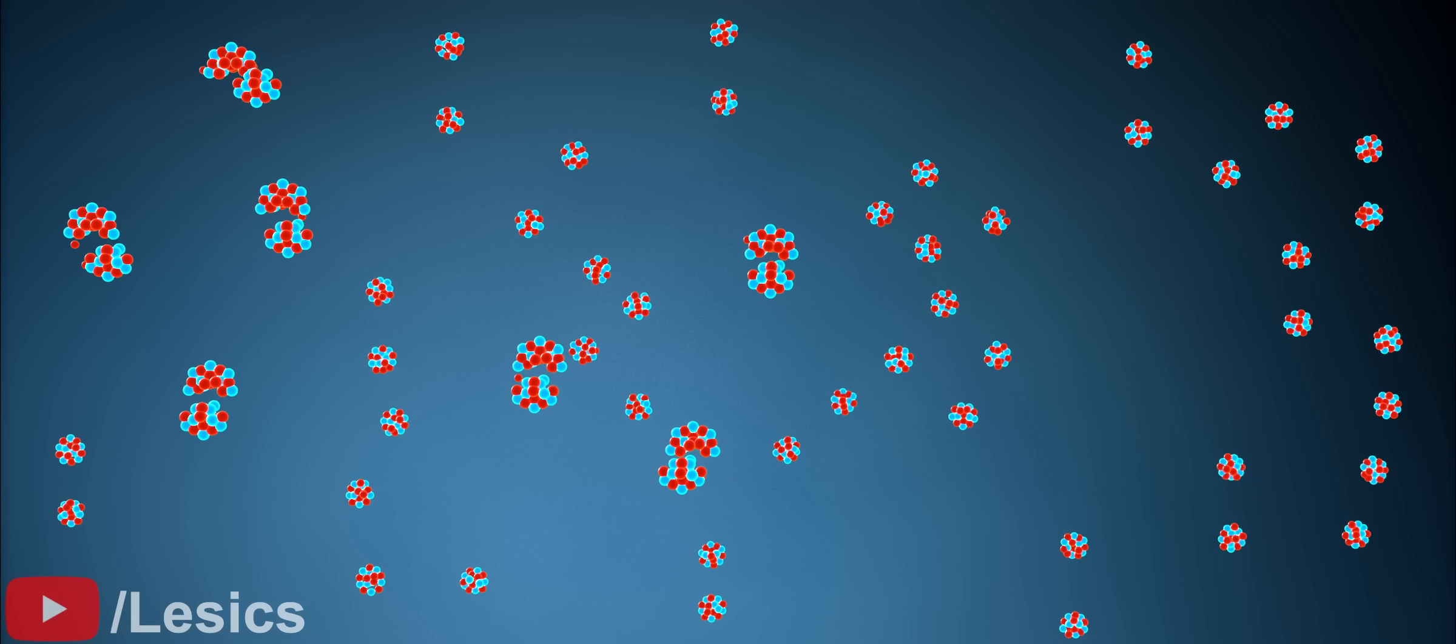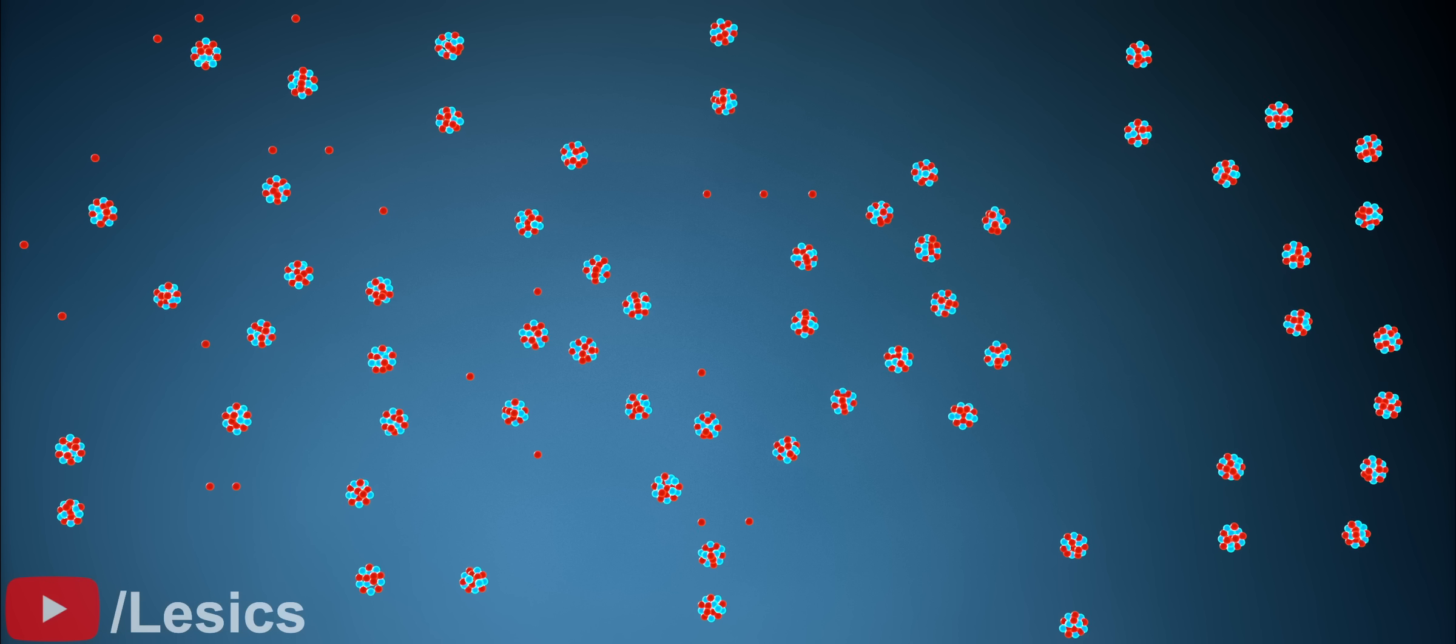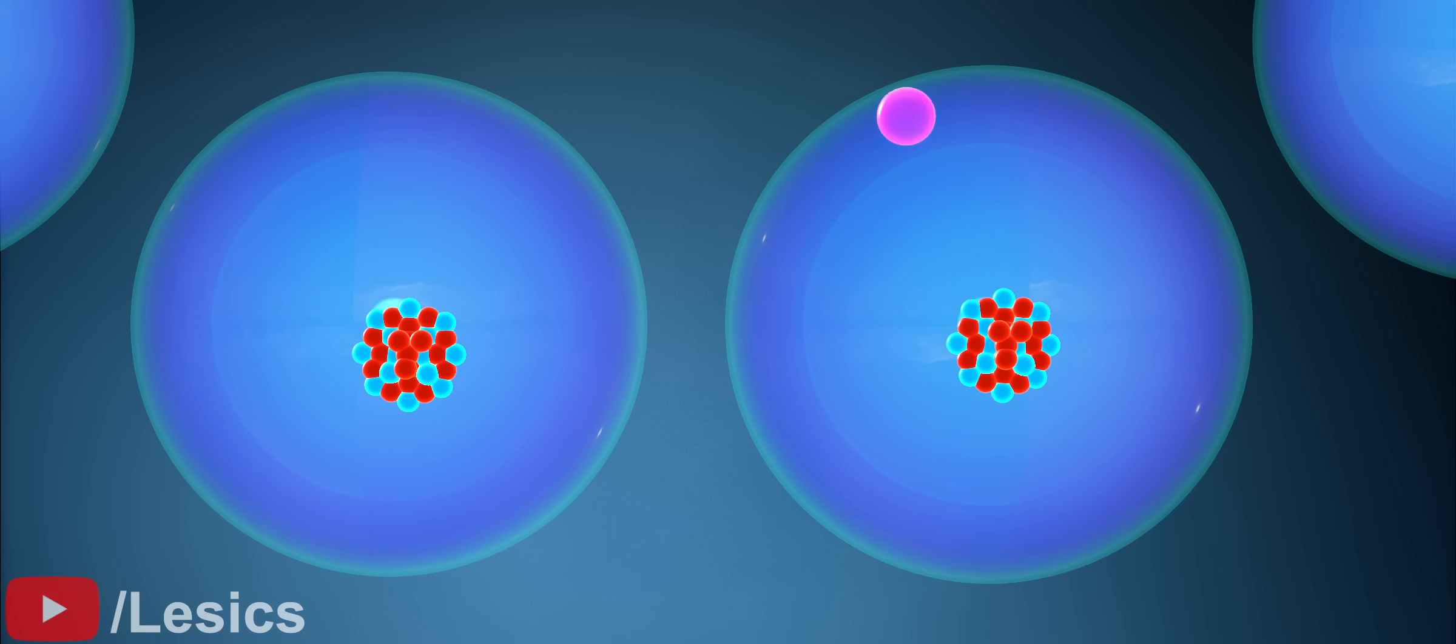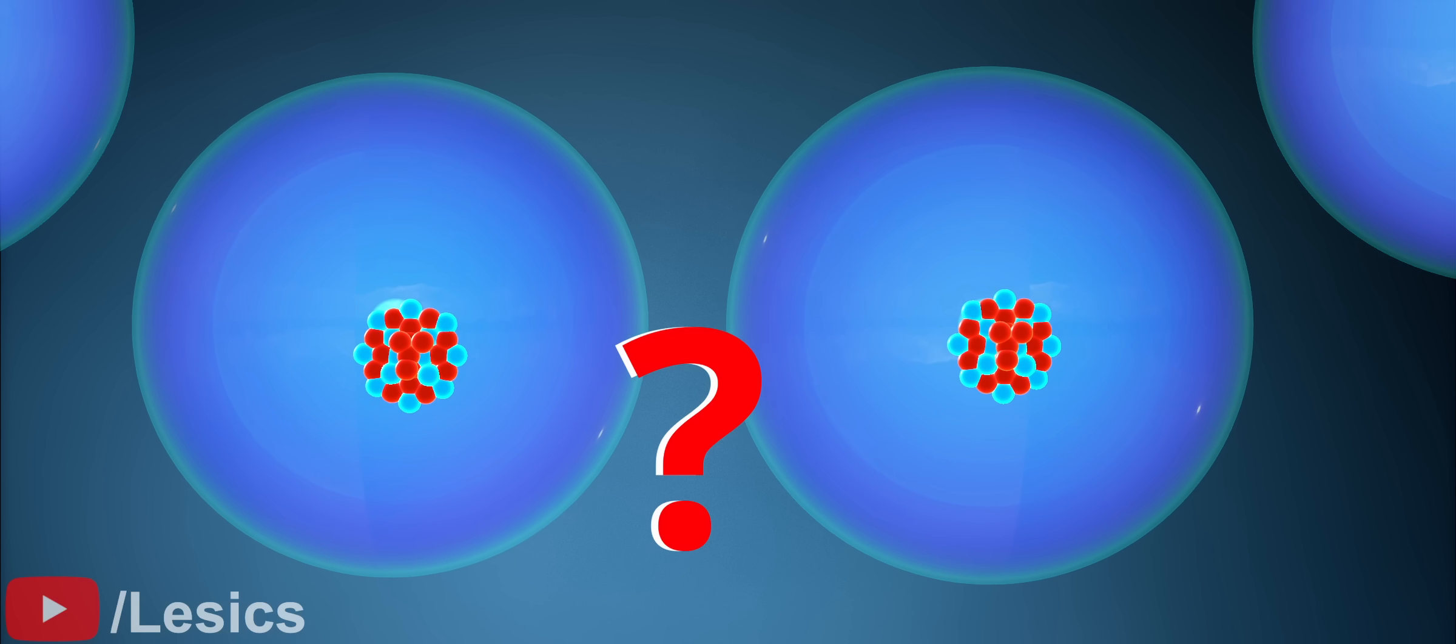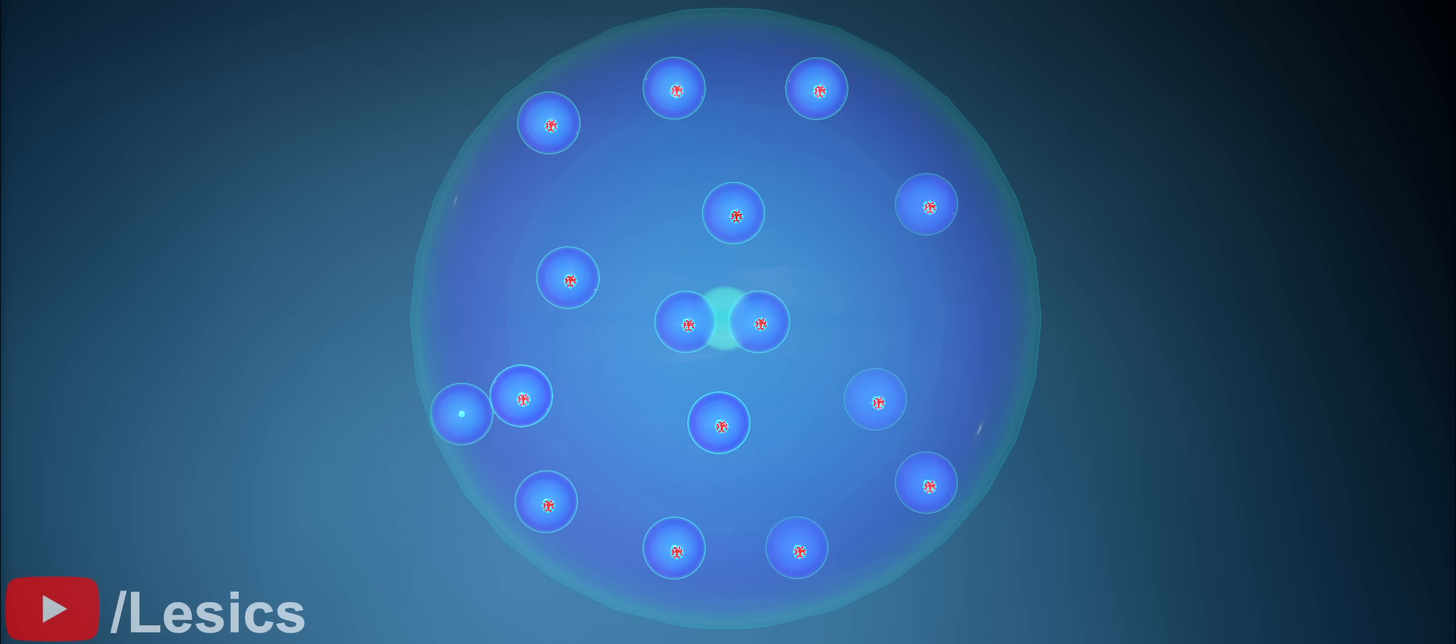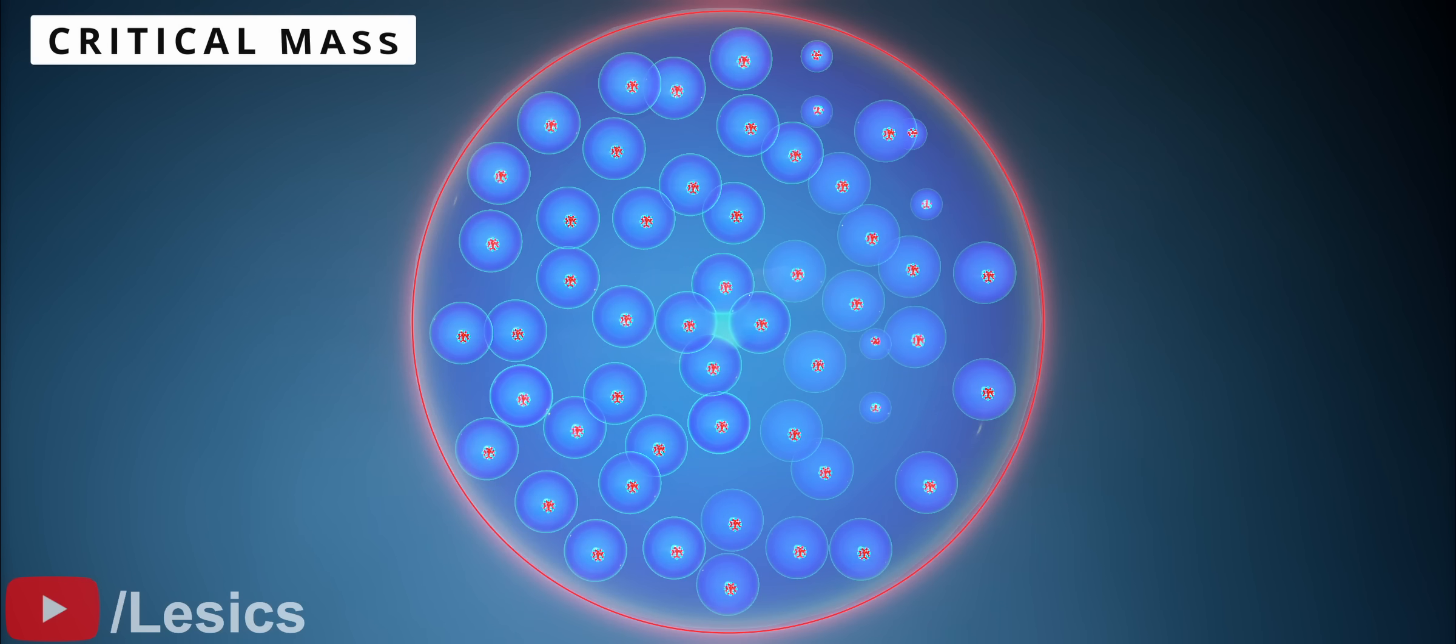But why does the extra neutron hit other atoms? Atoms are mostly made up of hollow space, so neutrons may fly away without hitting other uranium nuclei. To ensure that the neutrons hit another uranium atom, a certain amount of uranium must be present to sustain the chain reaction. This is known as critical mass.